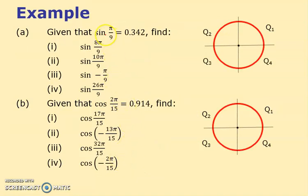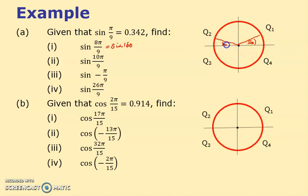Given that sine(π/9) = 0.342: π/9 is 20 degrees. For sine(8π/9): 8π/9 is 160 degrees. Drawing 160 degrees, the equivalent angle to the horizontal is 20 degrees — the same as before. Using CAST, sine is positive there, so sine(8π/9) = 0.342.